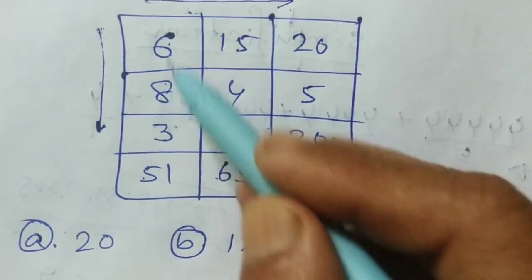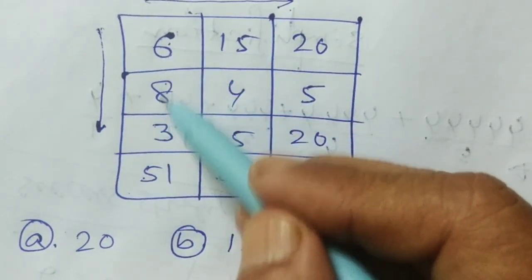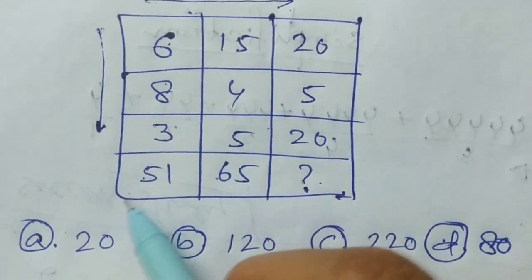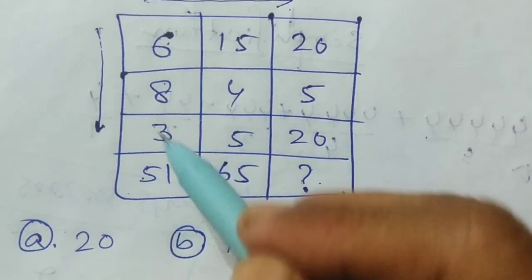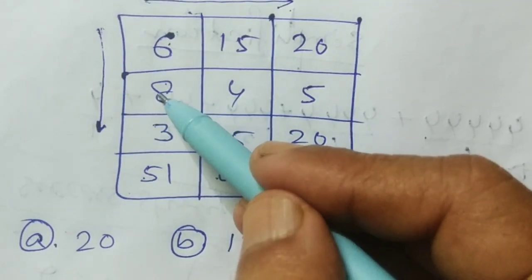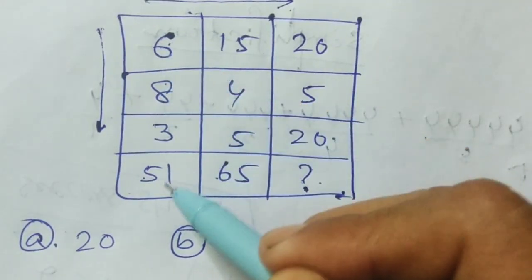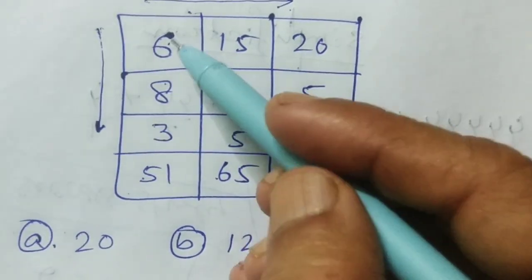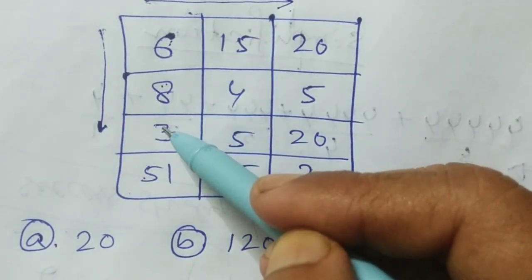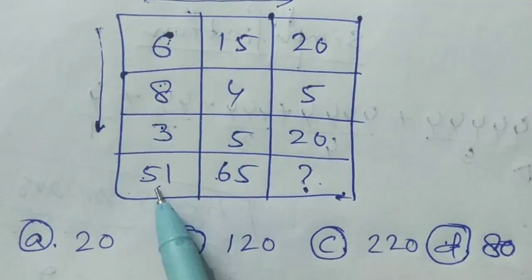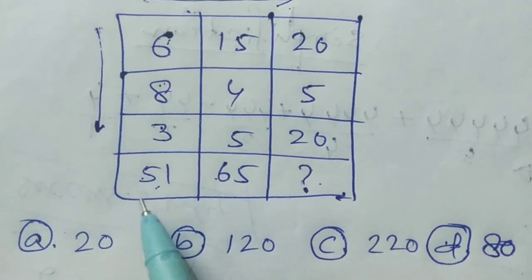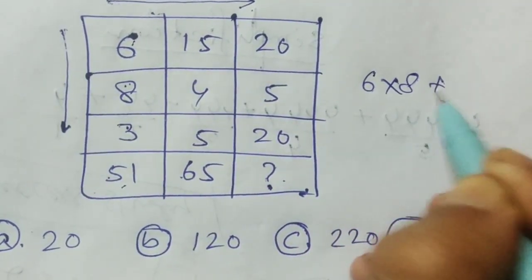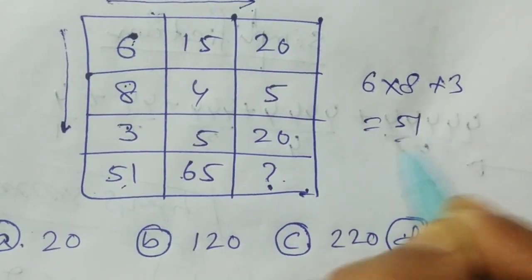Try multiplication: 6 into 8 is 48, into 3 is more than 51 — not possible. Then 8 into 3 is 24, plus 6 is 51? No, not possible. Now try: 6 into 8 plus 3. That is 48 plus 3, which equals 51. Yes! So the condition is 6 × 8 + 3 = 51.